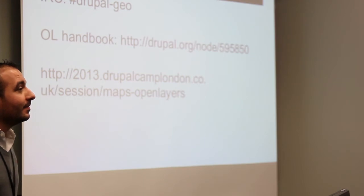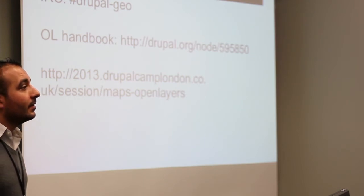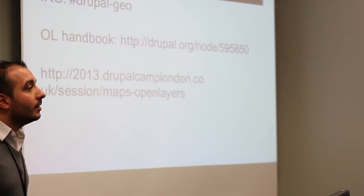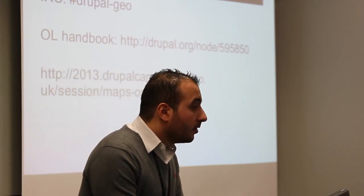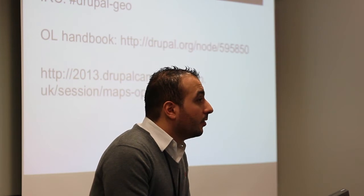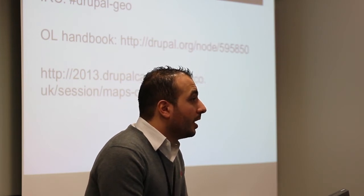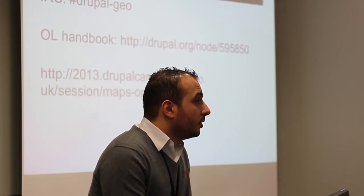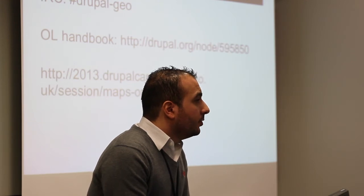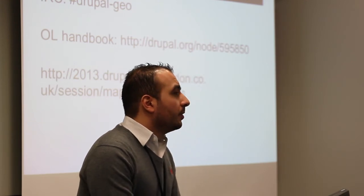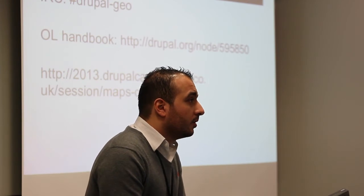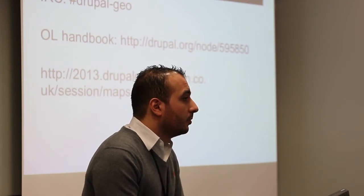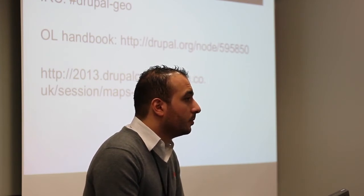Q: Is the output always raster tiles, or is it possible to have vector output like SVG? A: It depends on the library and on the layer type you're using, but I think OpenLayers already has some layer types using SVG — but I don't know them by heart. It means it's worth having a look.